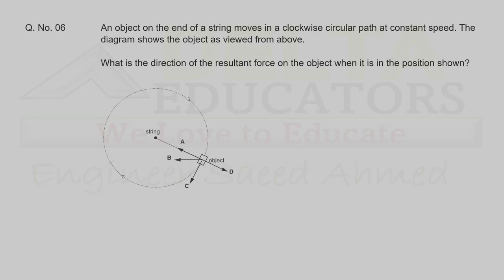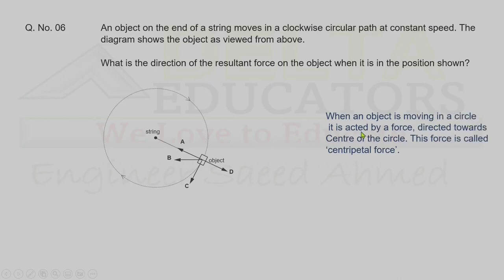Question 6. An object on a string moves in a clockwise circular path at constant speed. What is the direction of the resultant force when the object is in the position shown? When an object moves in a circular path, the resultant force is directed toward the center of the circle, represented by option A. Correct option is A.